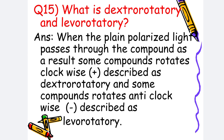What is dextrorotatory and levorotatory? When plane polarized light passes through compounds, some compounds rotate clockwise — described as dextrorotatory — and some compounds rotate anticlockwise — described as levorotatory.